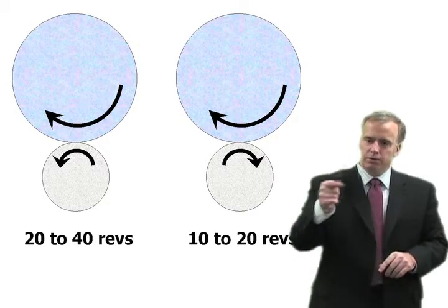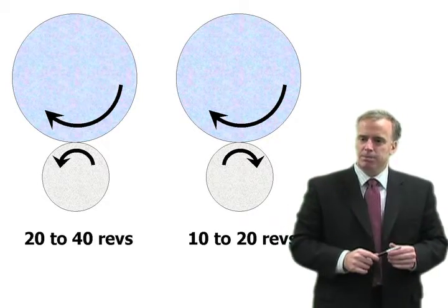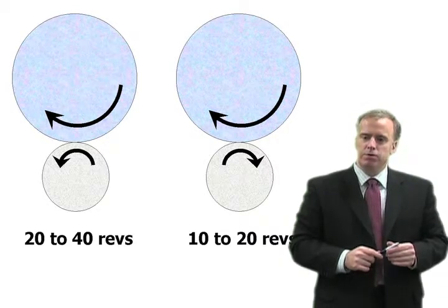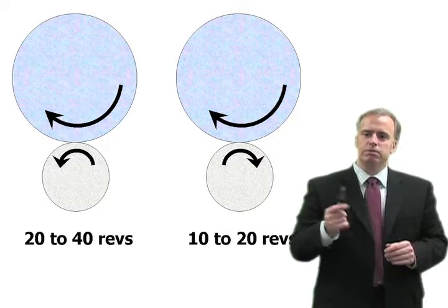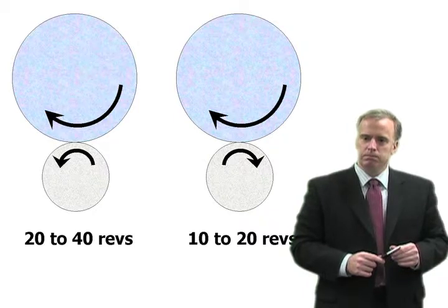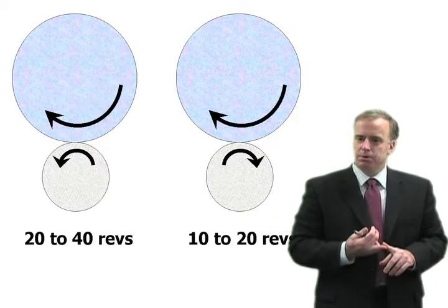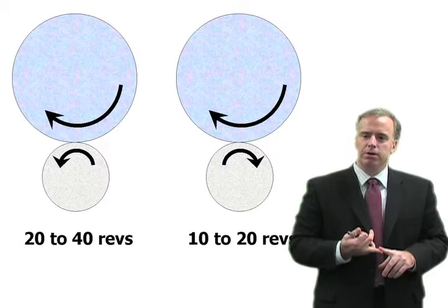If you don't dwell enough revolutions, your wheel is not going to be true. If you dwell too many revolutions, your wheel is going to become dull. So like I said, there's no magic number. Just keep it somewhere in this ballpark and you'll be fine.